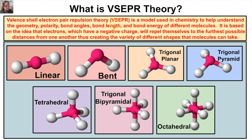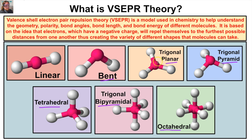VSEPR, or the valence shell electron pair repulsion theory, is a model that will help us visualize what some of these molecules are going to look like and the shapes they take. It's based on the idea that electrons within a molecule are negative and will repel themselves to the furthest possible distances, giving us shapes such as linear, bent, trigonal planar, trigonal pyramid, tetrahedral, trigonal bipyramidal, and octahedral. All of these shapes have different bond angles, bond lengths, bond energies, and polarities.